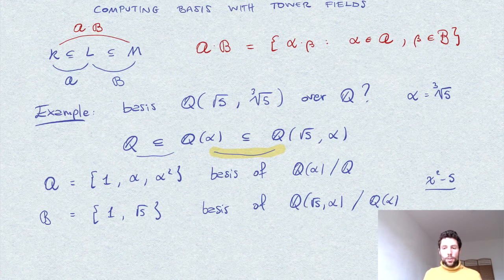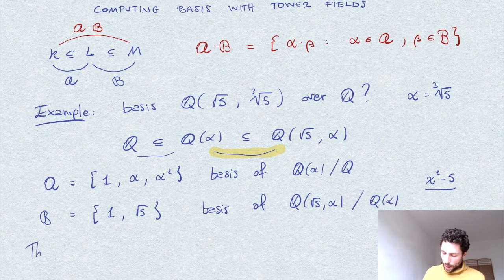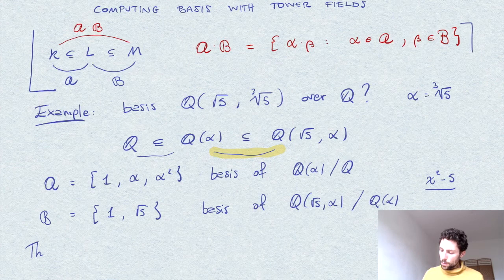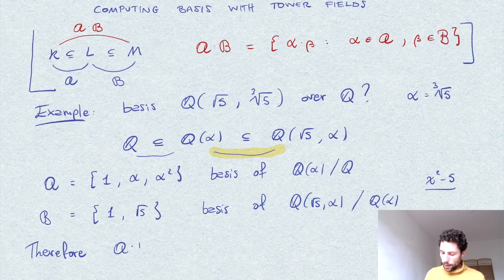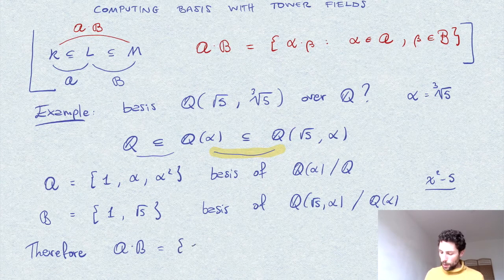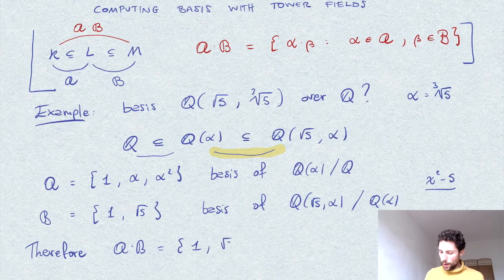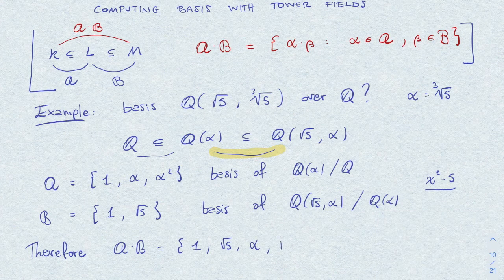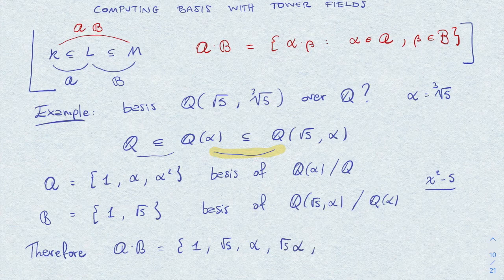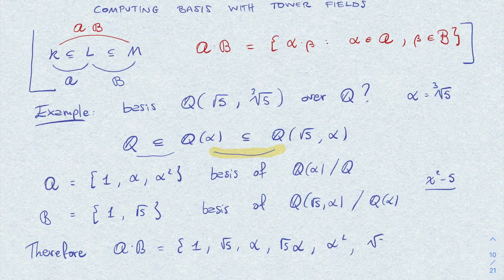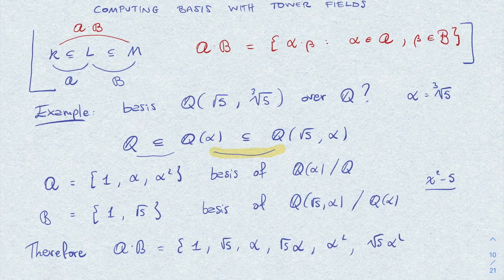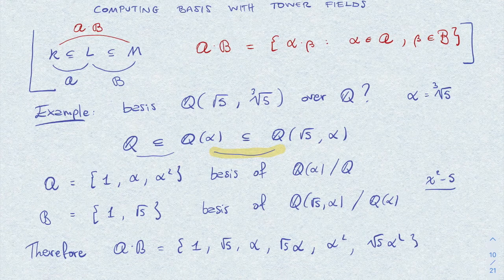Once we have this, we conclude by applying the result here on top, that the basis is A dot B given by 1, square root of 5, alpha, then all the product square root of 5 times alpha, alpha squared, square root of 5 times alpha squared. Now I have six elements, so this is a basis.